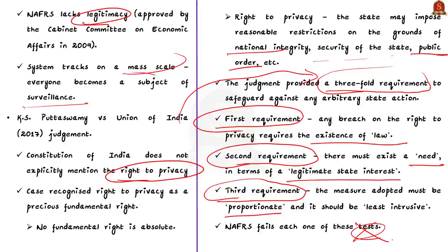According to the editorial, NAFRS does not satisfy this threefold requirement. It is not backed by a law, there is no specific reason affecting the state's interest or security to justify creating NAFRS, and it is not proportionate — NAFRS is highly intrusive. The major cons of NAFRS are: it is intrusive, works in possibilities, has risk of error and bias, produces false positives, can lead to profiling of some groups, lacks legitimacy, can enable mass surveillance, and fails to satisfy the Puttaswamy threefold requirement.